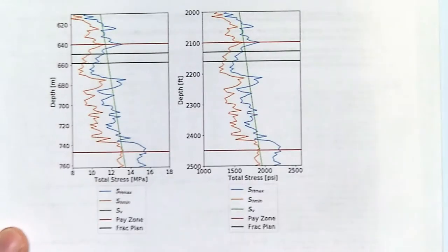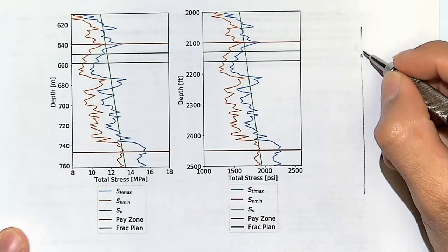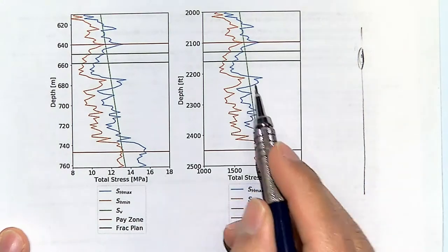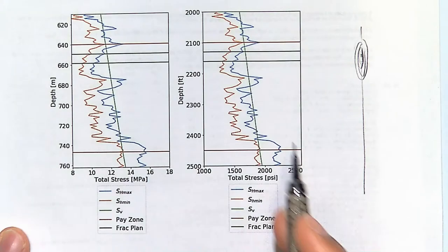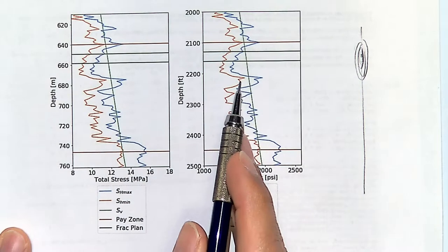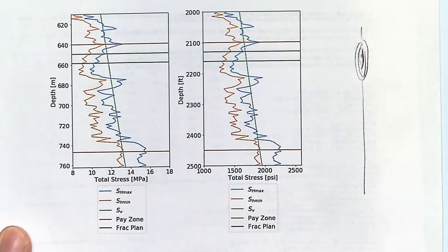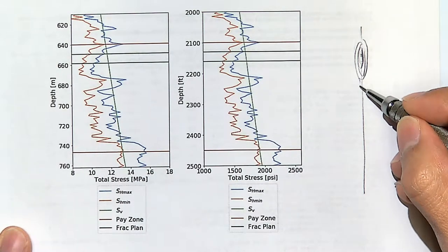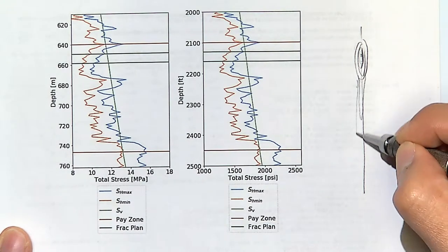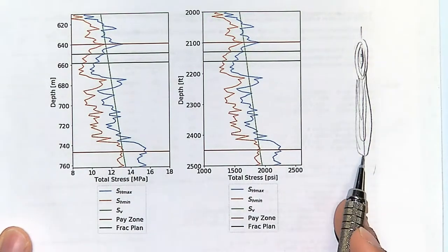If you initiate a fracture at this point, it will likely grow in this direction. In a cross-section with the perforations there, it will start growing and then bump into a location of high stress. Only after it has enough pressure to overcome those stresses will it grow up or down. If it grows down, it will propagate in this direction until it reaches the lower stress boundary.